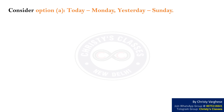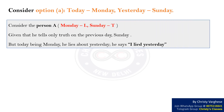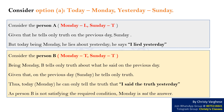Consider option A, which tells that today is Monday — then yesterday was Sunday. Consider person A: he lies on Monday and tells truth on Sunday. Given that he tells only truth on the previous day (Sunday), but today being Monday, he lies about yesterday and says 'I lied yesterday.' Consider person B: he speaks truth on both Monday and Sunday. Being Monday, B tells only truth about what he said on the previous day. Given that on the previous day he tells only truth, today he can only tell the truth that 'I said the truth yesterday.' As person B is not satisfying the required condition, Monday is not the answer.